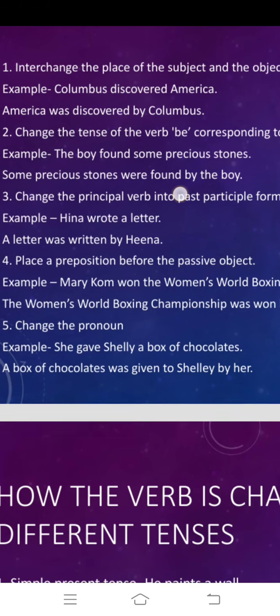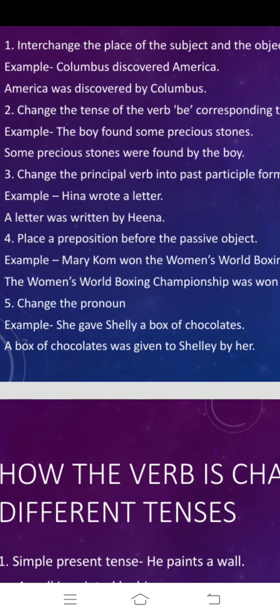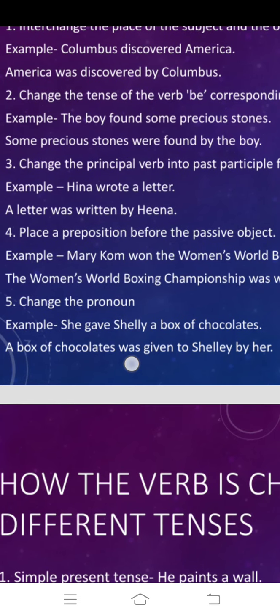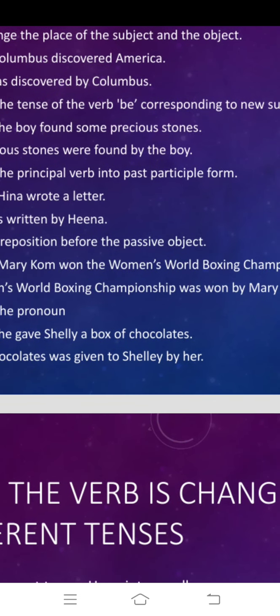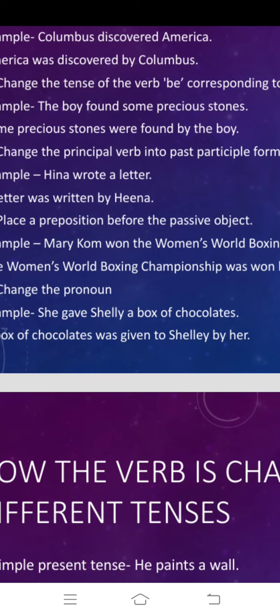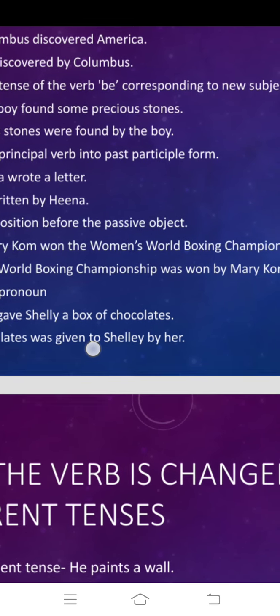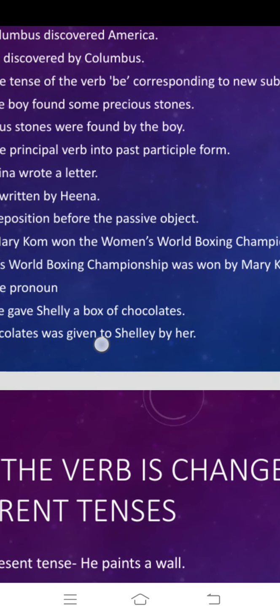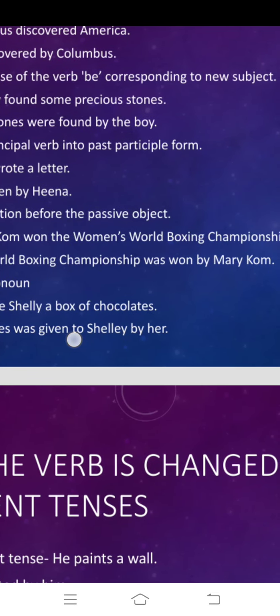Number four: place a preposition before the passive object. You might have observed in the examples that the preposition 'by' has been added in every sentence. For example, Mary Kom won the Women's World Boxing Championship. The passive form is: the Women's World Boxing Championship was won by Mary Kom. So preposition 'by' has been added just before the passive object, Mary Kom.